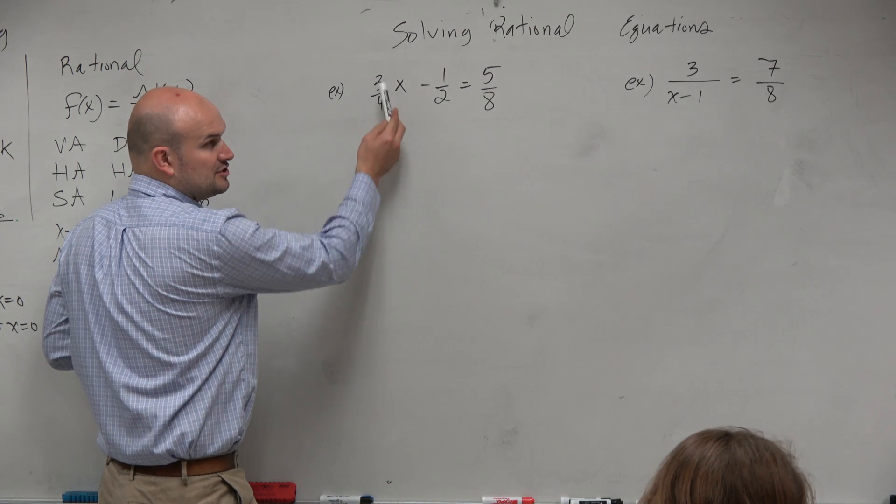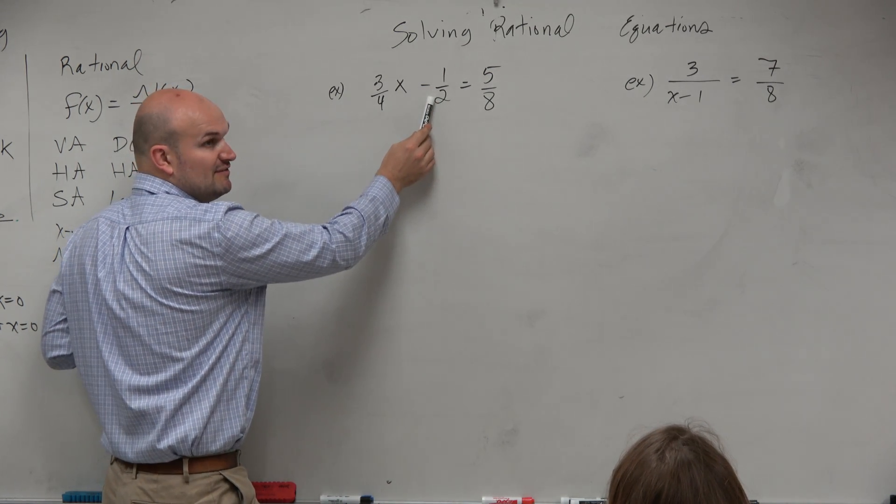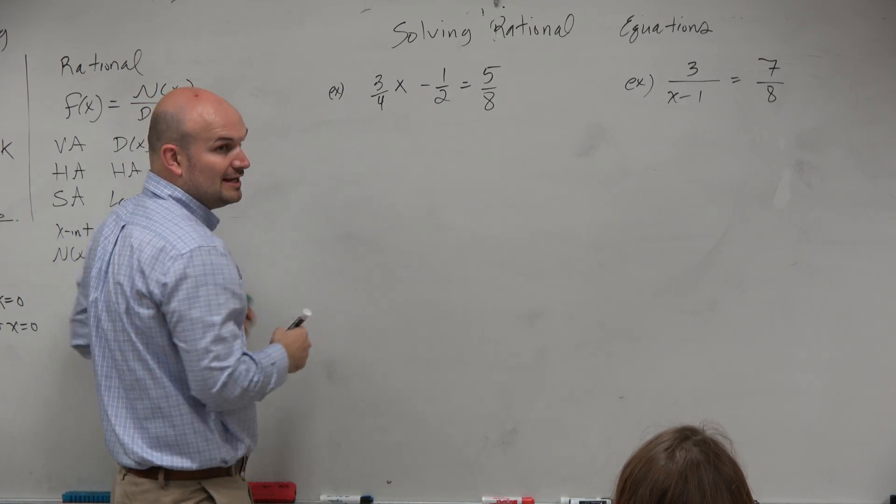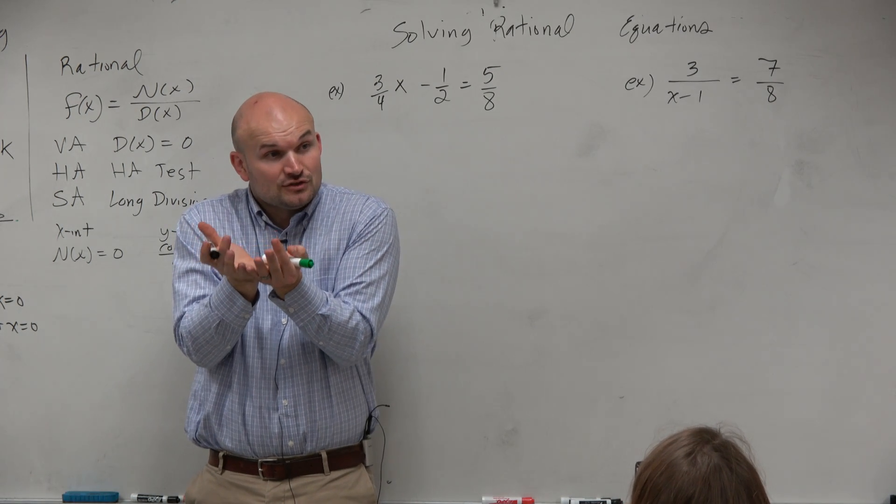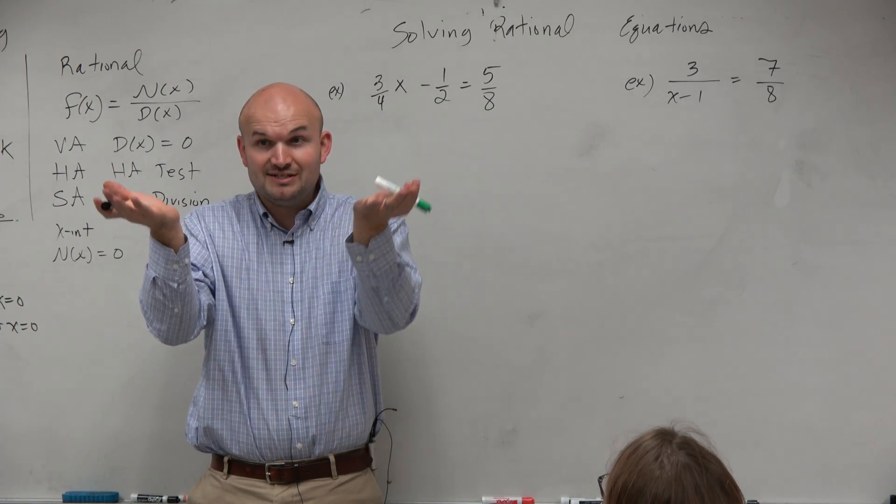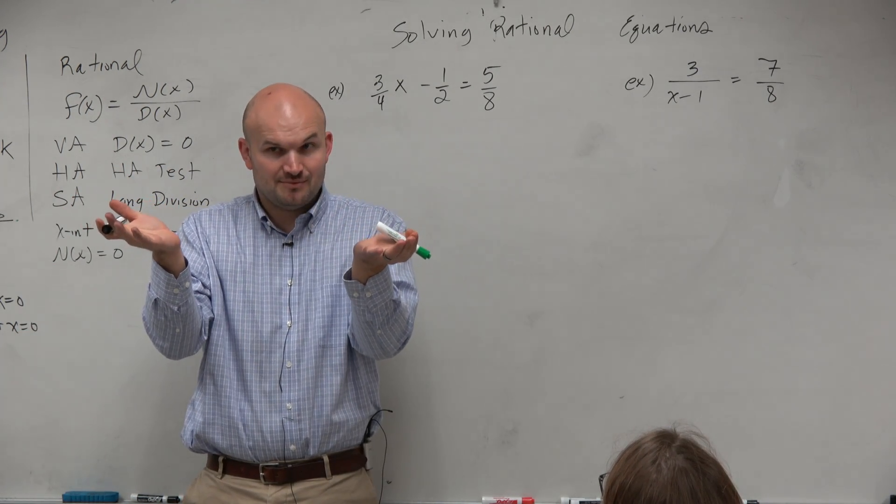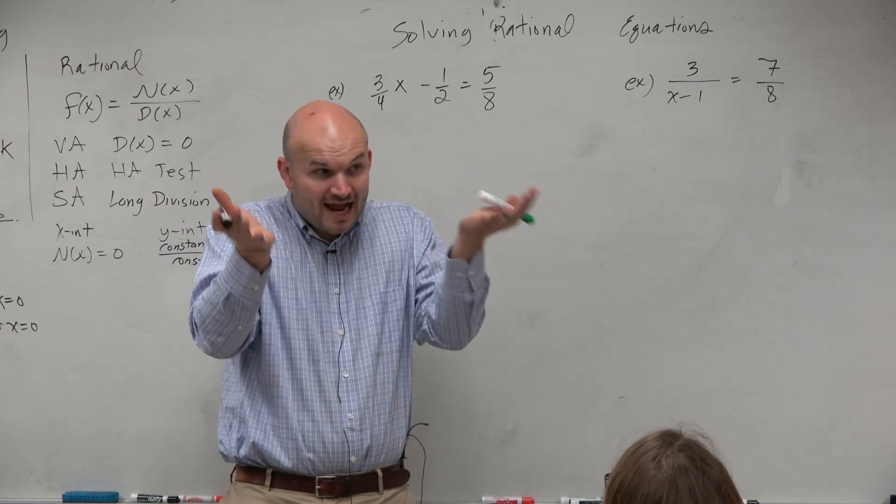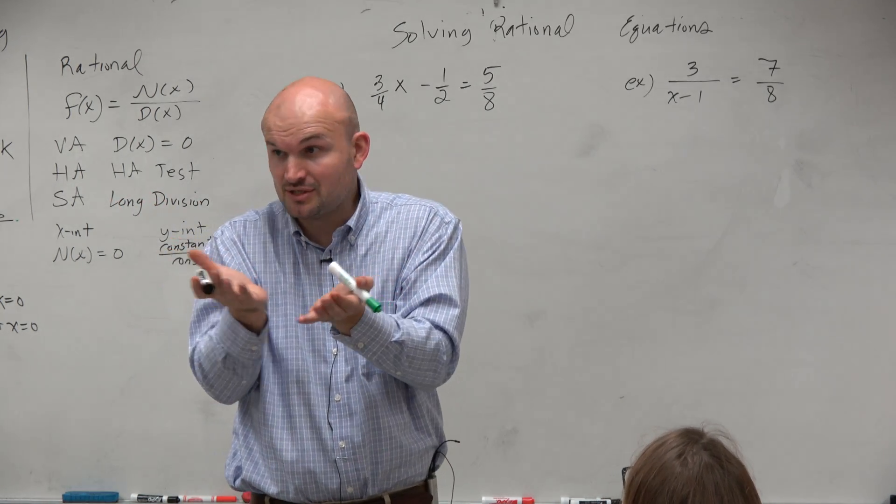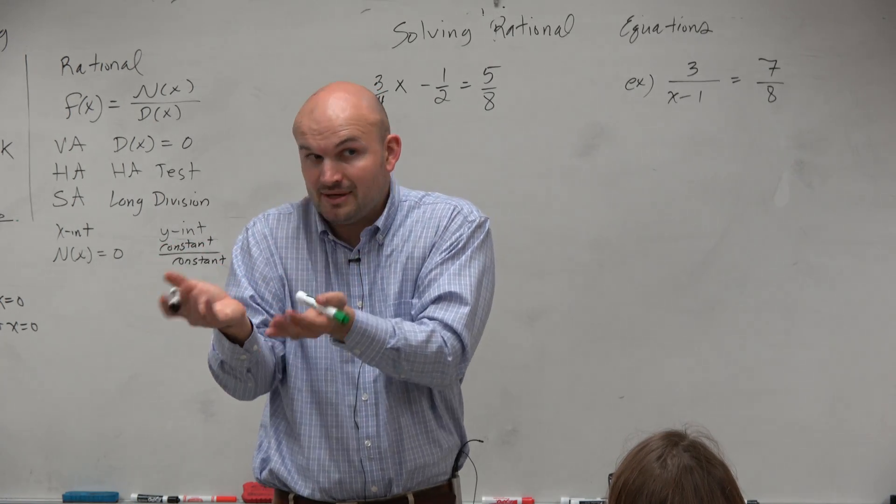Again, look at every single term. This term is being divided by 4, this term is being divided by 2, this term is being divided by 8. If we could multiply every single term by a number that they all divide into, we wouldn't have a fraction anymore. And that number that we can multiply everything by that they all divide into is called our least common multiple or denominator.